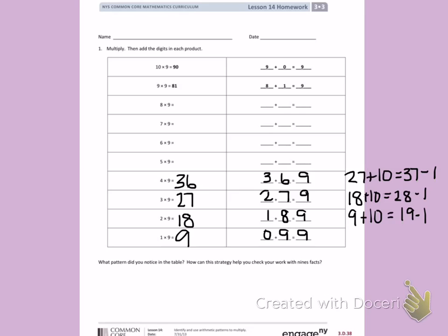In the tens place, I have 1, 2, 3. I am counting in order so I can continue 4, 5, 6, 7, 8, 9.